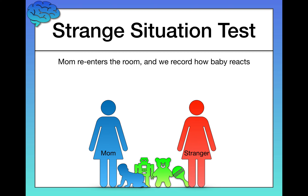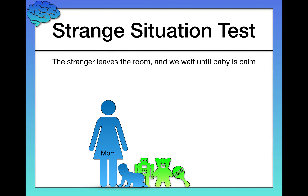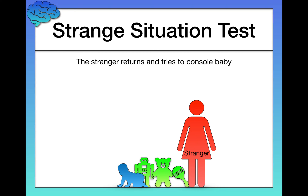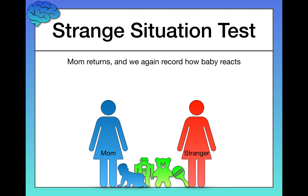Phase two begins here. The stranger leaves the room and we wait until the baby is calm. Then mom gets a cue to leave the baby alone. The stranger returns and tries to console the baby — tries to play with it. This is typically distressing for children, so there might be crying, but it's not cruel; this is the sort of thing they encounter on a daily basis. Then mom returns and we again record how the baby reacts — this is the second key measurement. Based on those two reactions, we assess what type of attachment the child has to the parent.